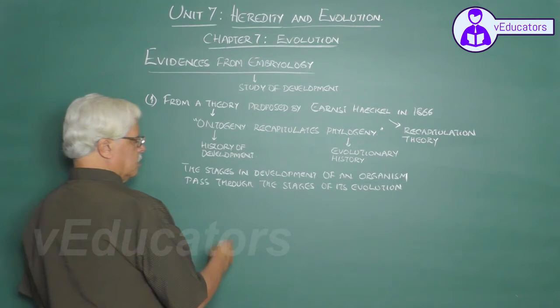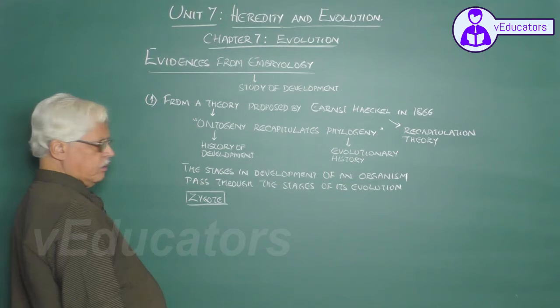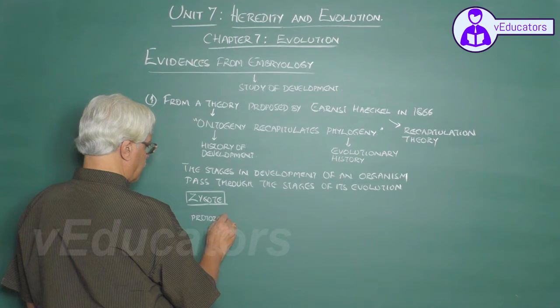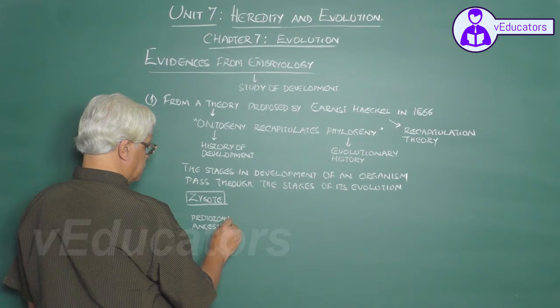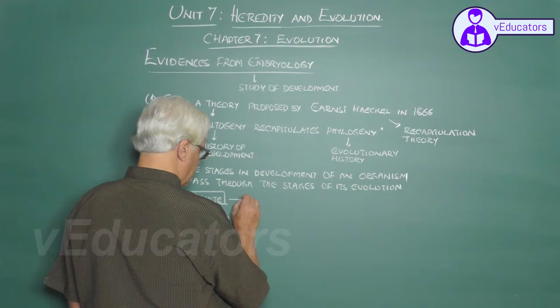For example, if you take the development of a vertebrate animal, it begins its development in the form of a single cell called the zygote, which is the fusion product of sperm and the ovum. This stage is supposed to represent the earliest stage in animals — the protozoans. So, the zygote stage is supposed to represent the protozoan ancestry.